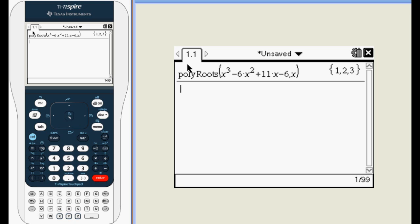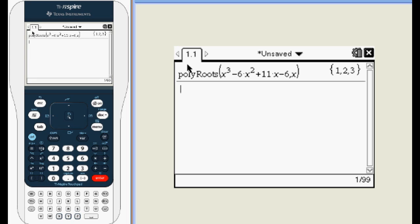Second, the calculator won't convert between decimals and radicals. So if your answer has a square root in it, the solution will only appear in decimal form.